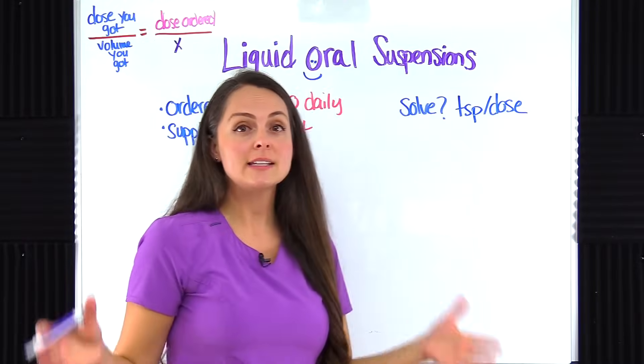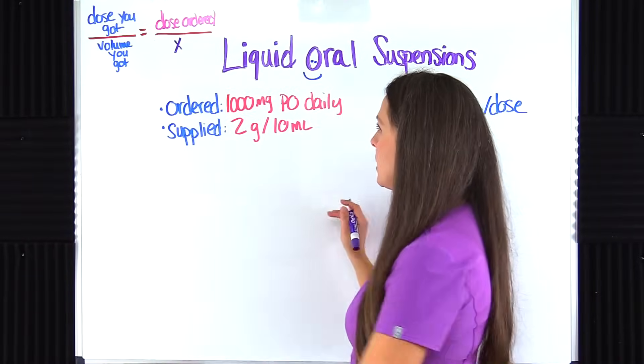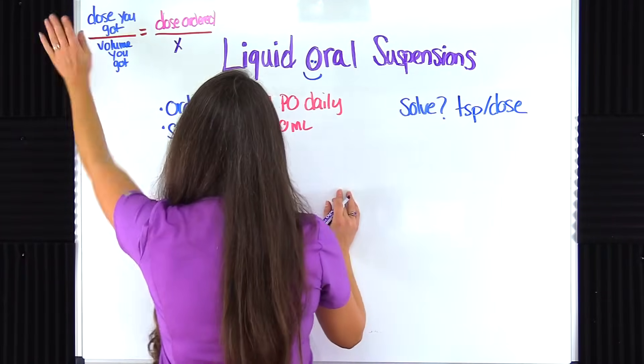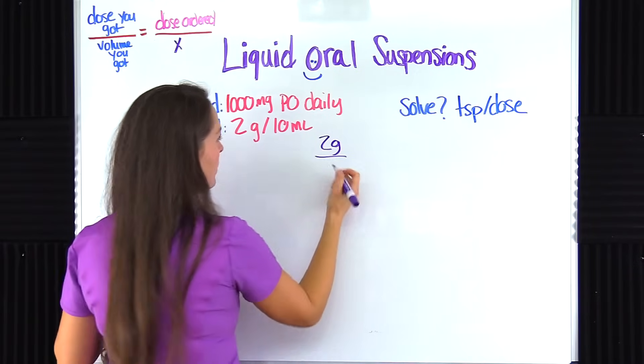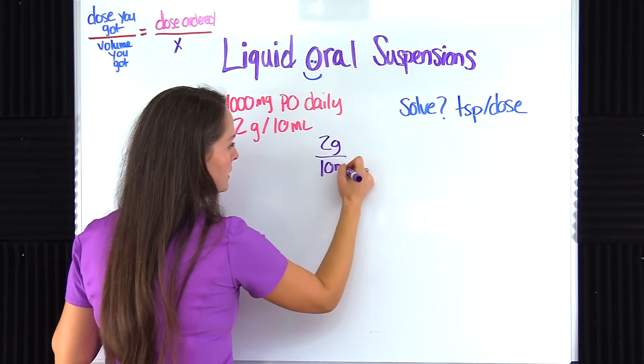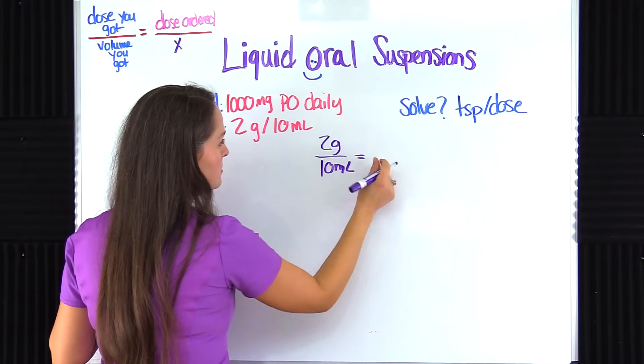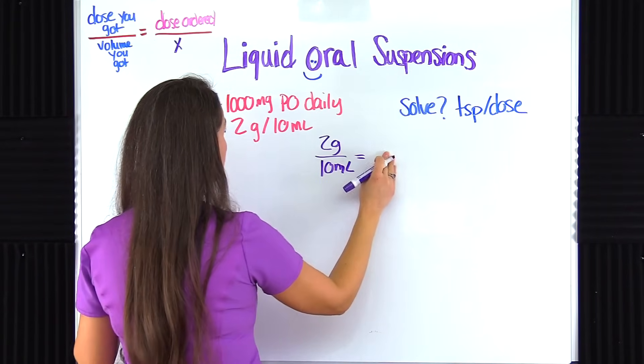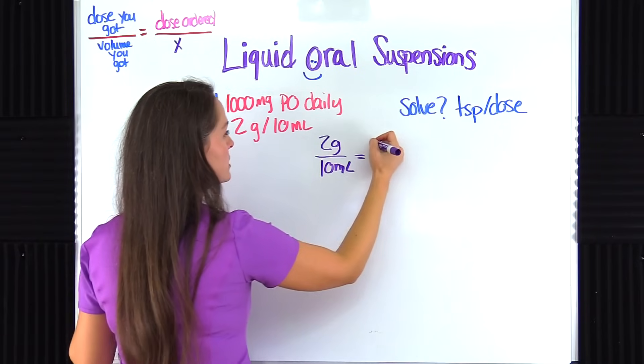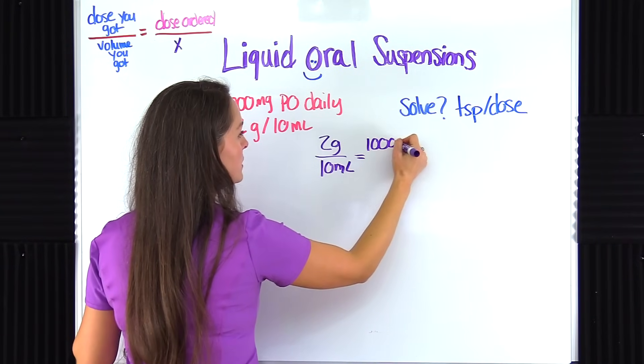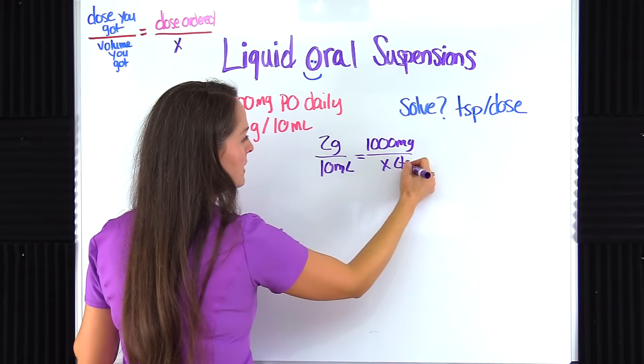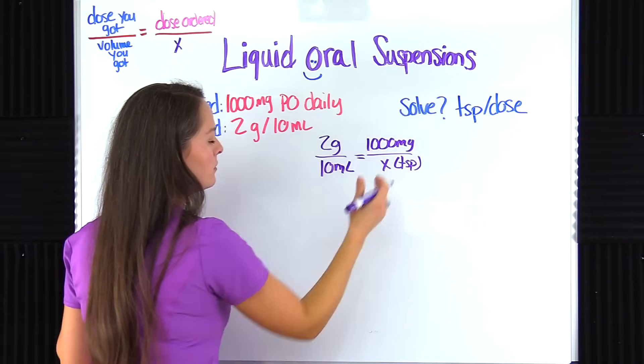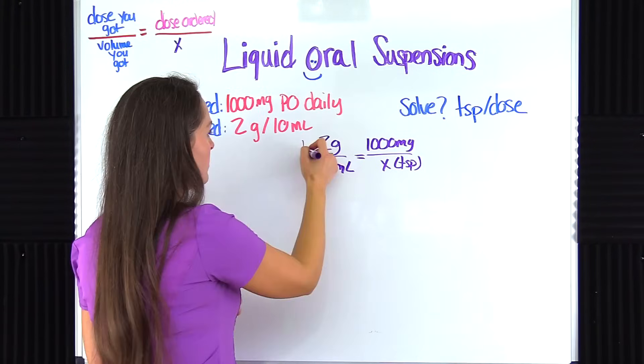So first let's create our known ratio. So the dose we got is a 2 gram dose over the volume we got, which is a 10 milliliter volume. This should be equal to the dose that's been ordered by the healthcare provider, which is 1,000 milligrams over x, and we're trying to figure out teaspoons. So that is what we don't know. This is our unknown ratio. So that's step one.